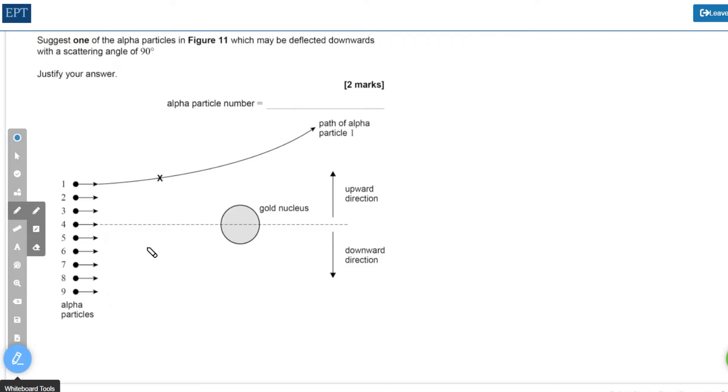Clearly it's not going to be one, two, or three because they're going upwards. Particle four will just bounce straight back because it's in line with the center of the gold nucleus. Five is possible because it's quite close and it's going to be forced downwards. Six, well, you could argue six as well, just about.